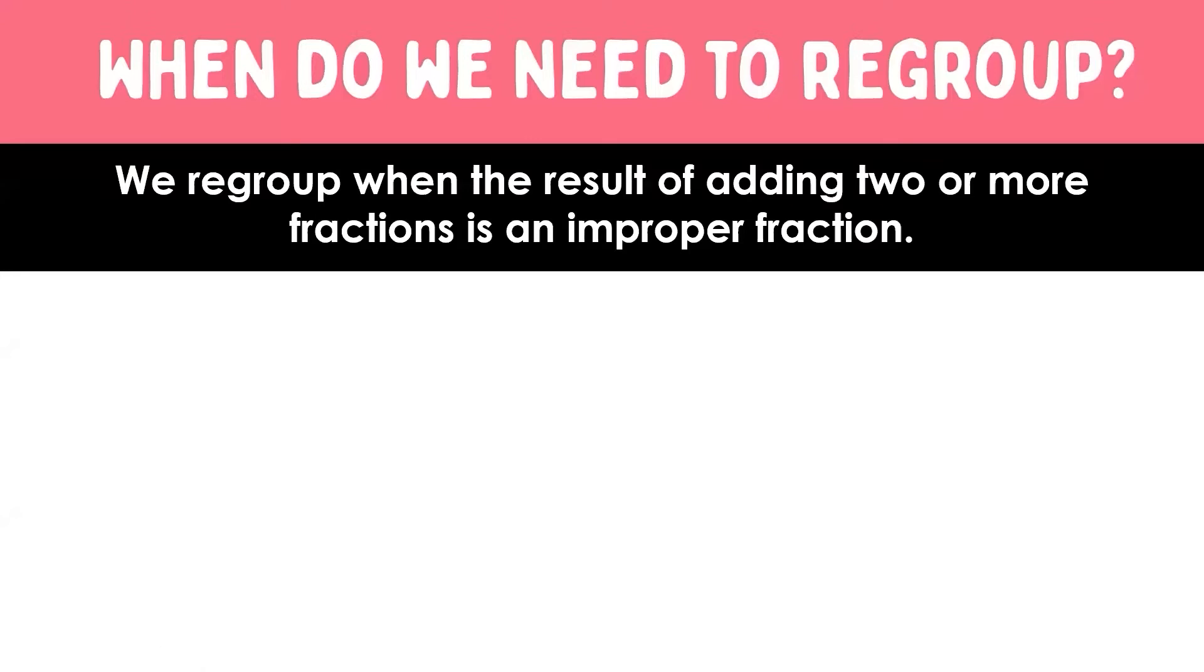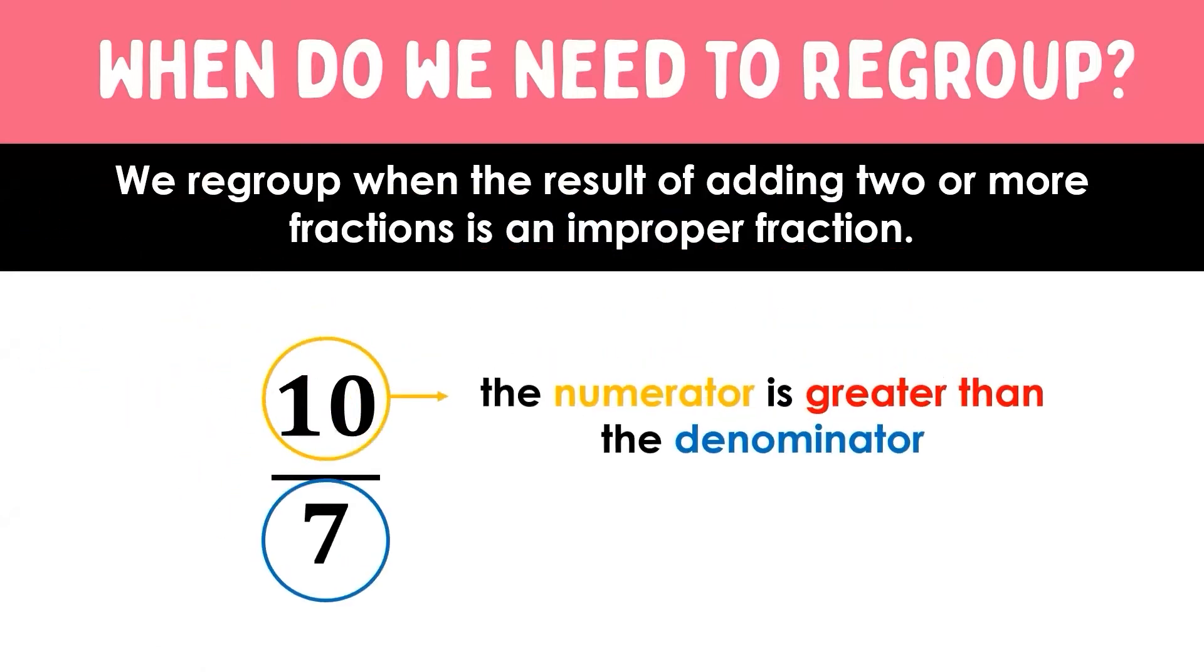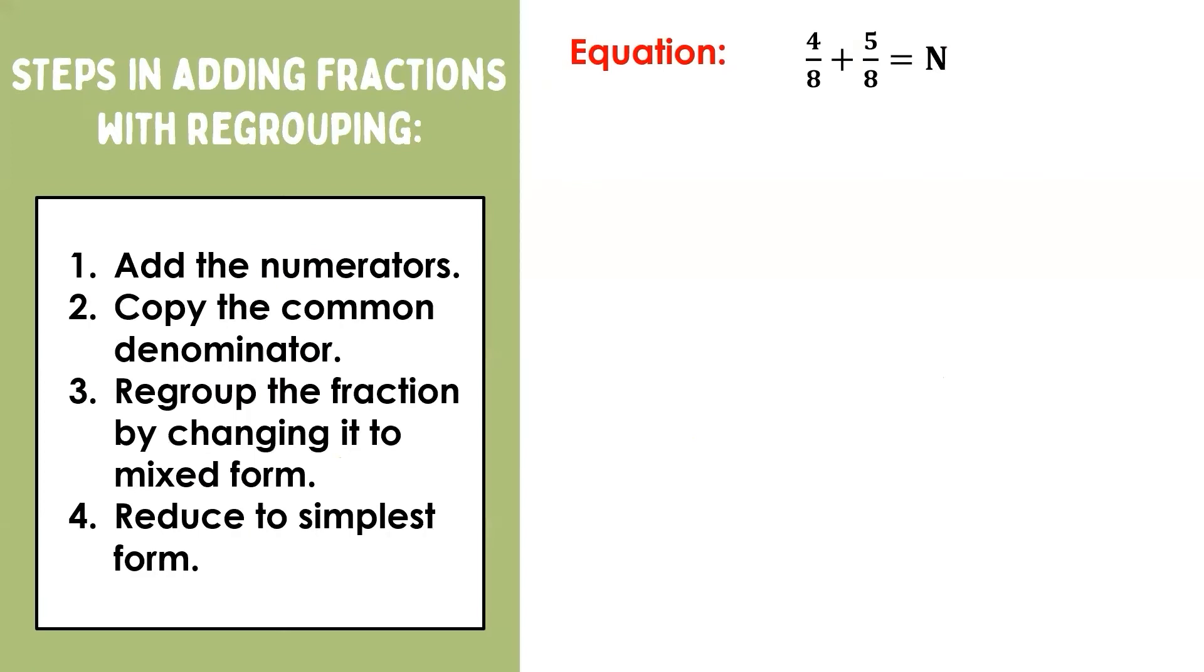First, you have to remember that we do regrouping when adding fractions if the result of adding two or more fractions is an improper fraction. Now, let us recall that an improper fraction has a numerator greater than its denominator, just like this fraction, ten-sevenths. So how is regrouping done? Let's have our first example. Four-eighths plus five-eighths equals n.